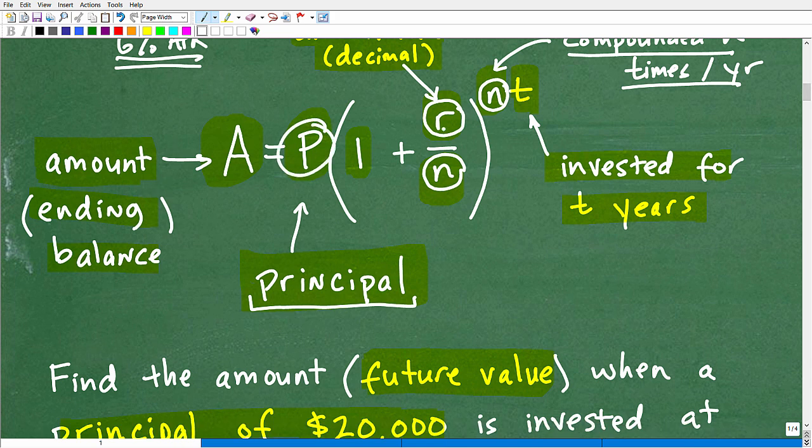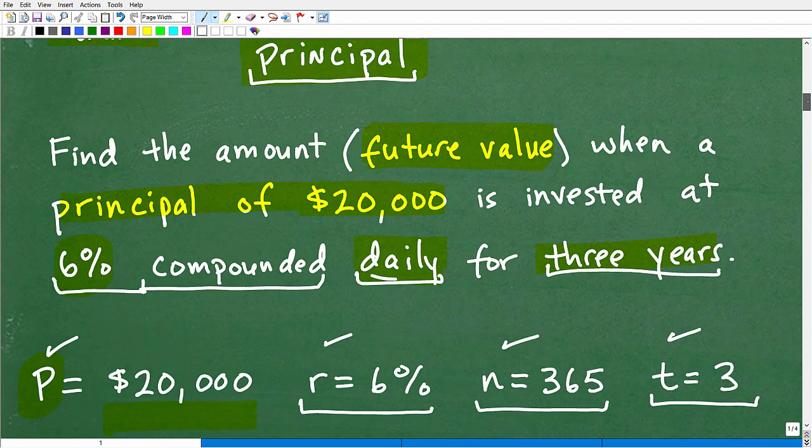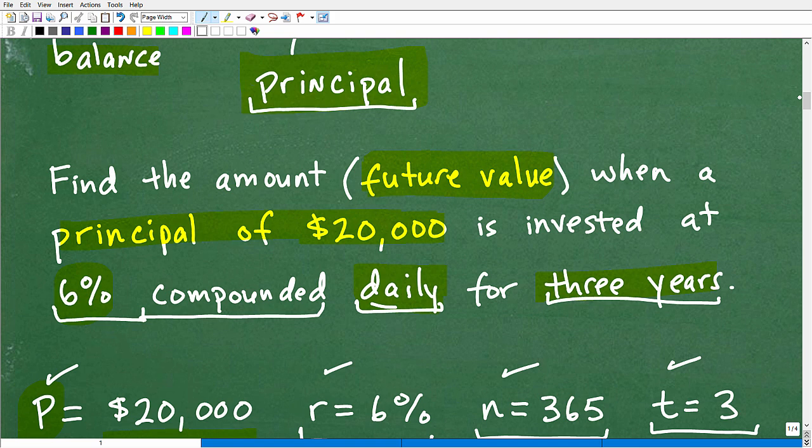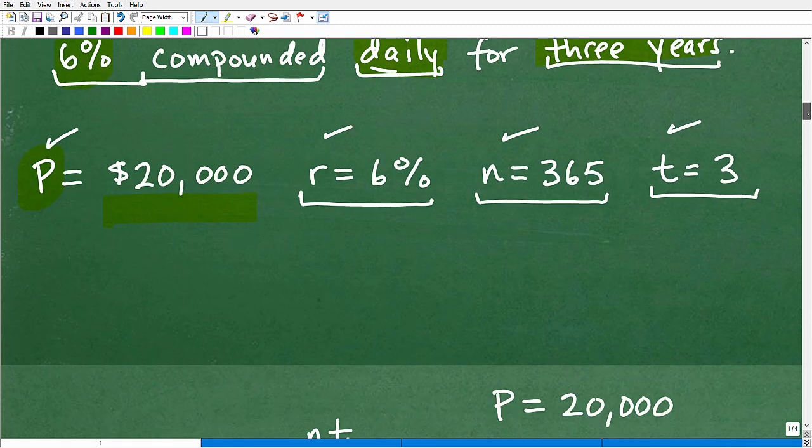If we look up here, that's all we need. We have P, R, N, and T. This just becomes basically a plug into the formula and don't make any mistakes with our calculator. So let's go ahead and do that now.